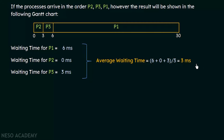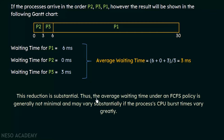In this case the average waiting time has reduced substantially — from 17ms in the previous example to 3ms for the same processes in a different order. The average waiting time under an FCFS policy is generally not minimal and may vary substantially if the processes' CPU burst times vary greatly. The order of arrival and burst time both significantly affect average waiting time.